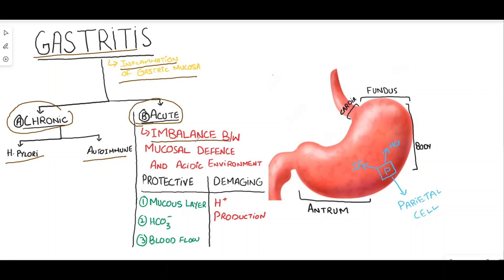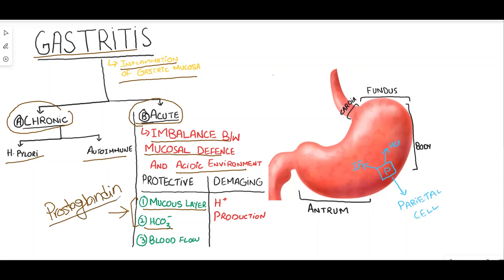The pathophysiology of acute gastritis is basically the imbalance between the mucosal defense and the acidic environment. The mucosal defense factors include the mucous layer, bicarbonate ions secreted due to prostaglandin, and blood flow - all of which are protective factors.